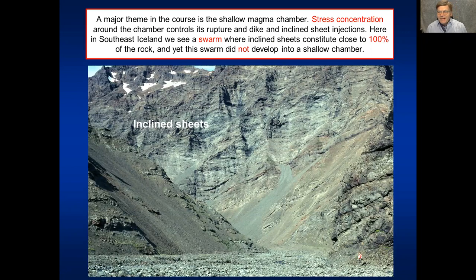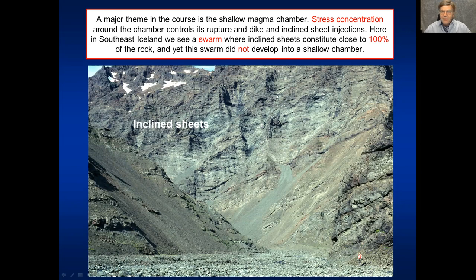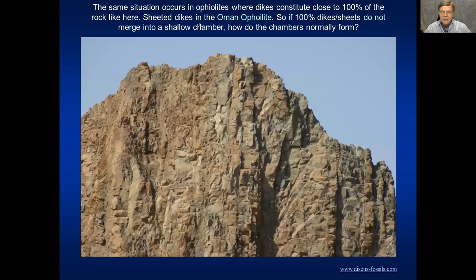A major theme in this course is the shallow magma chamber. Stress concentration around the chamber controls its rupture and dike and inclined sheet injections. Here in southeast Iceland we see a swarm where the wall is nearly 100% composed of inclined sheets and radial dikes. We see the person here for scale, and even though this swarm is so dense, it did not develop into a shell of a magma chamber. Similarly, in the Oman ophiolite, the sheeted dike complex is 100% dikes but they did not merge into a shallow magma chamber. So the question is: how do shallow magma chambers really form?